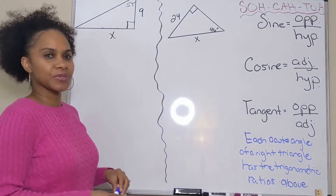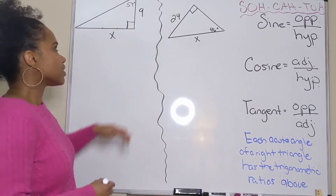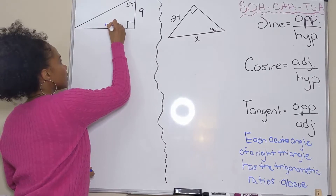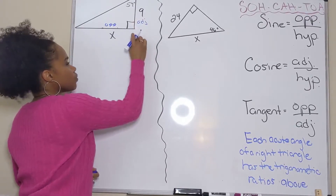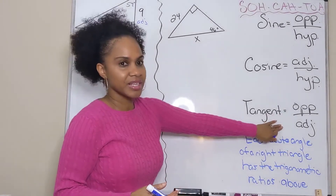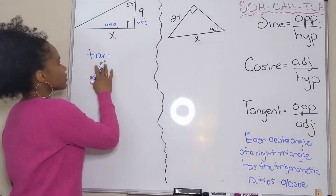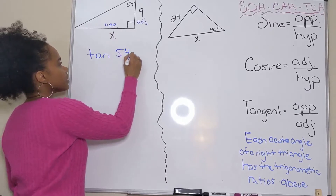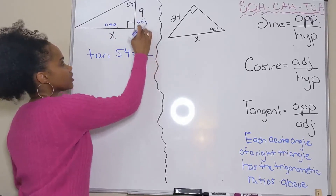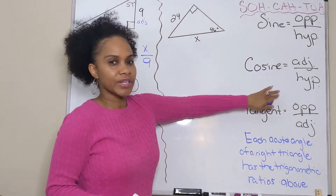Let's try these two examples. We want to find the length of x. We have an angle and a side, and in reference to this angle we have the opposite side and the adjacent side. The trig function that uses opposite and adjacent is tangent. So we set up the equation: tangent of 54 degrees equals opposite over adjacent, where the opposite side is x and the adjacent side is 9.